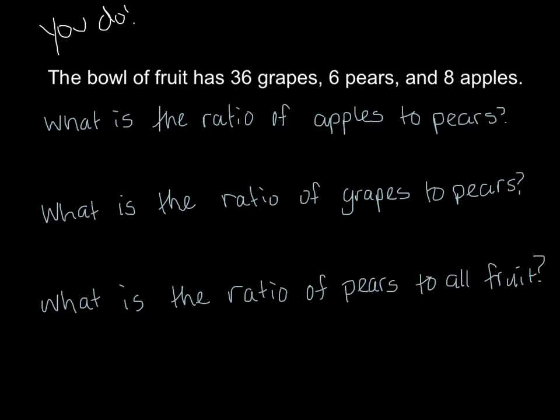It's your turn for a you do. Go ahead and write this down. The bowl of fruit has 36 grapes, 6 pears, and 8 apples. There's three questions for you to do on this you do. What is the ratio of apples to pears? What is the ratio of grapes to pears? And what is the ratio of pears to all fruit? Go ahead and push pause, look at the we do examples and see if you can figure out how to do these three questions.